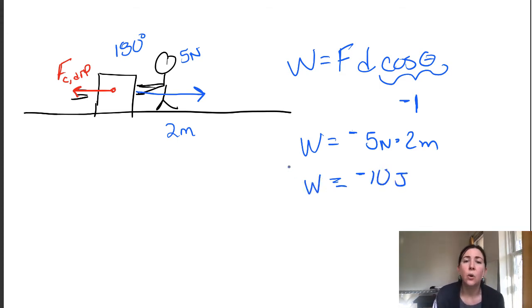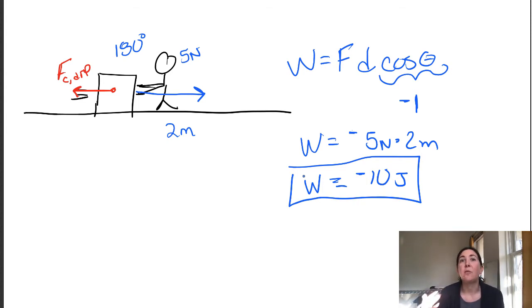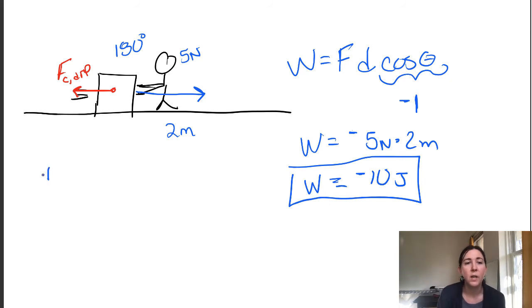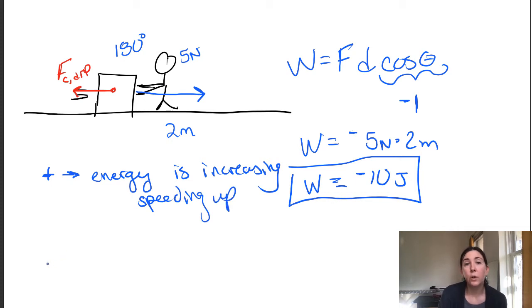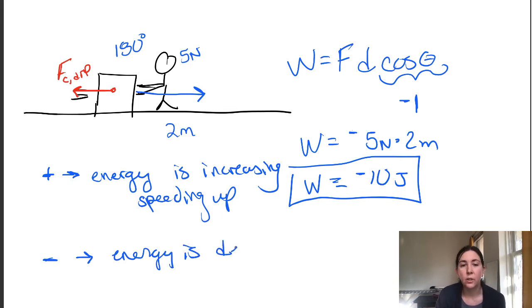So interestingly, work can be negative, but work is not a vector — it doesn't have a direction, but it can be negative or positive. Positive work means the energy of the object or system is increasing, which often means it's speeding up. If the work is negative, then energy is decreasing, meaning the object is slowing down.